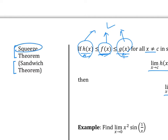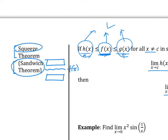With the squeeze theorem, we're squeezing function f between two functions h and g. There are times where we cannot find the limit of f by itself, so we think of the extreme cases: the highest number f can be is g, and the smallest number f can be is h. By finding the limits for h and g, we can figure out the limit of f by association. It's also called the sandwich theorem because we're sandwiching f between two functions like two pieces of bread.